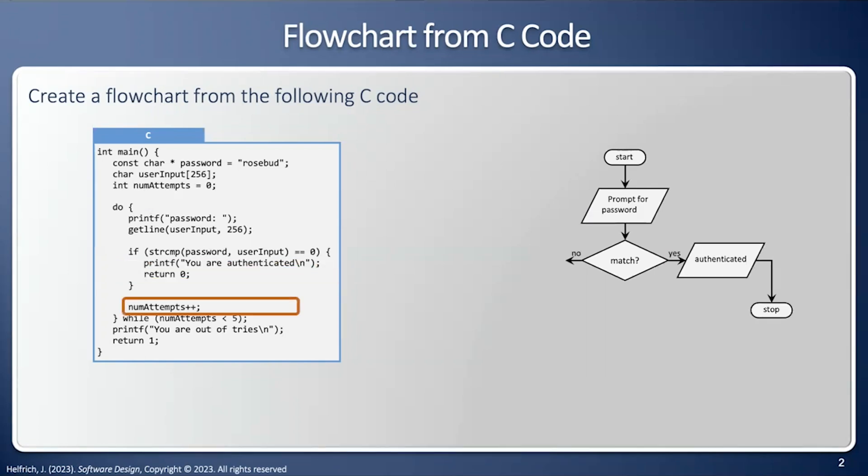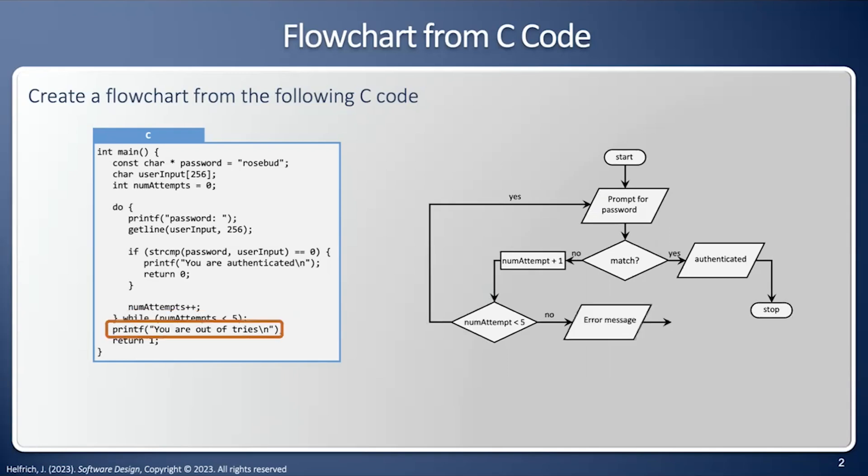But what happens if no? Well, then we're going to add one to our attempts. And then we're going to have another decision to see if we are less than 50. If we are less than 50, we'll prompt again. And this is how a while loop works. Remember, loops in flowcharts loop back up, or the arrow goes upstream. And if the answer is no, then we'll print an error message and end as well.